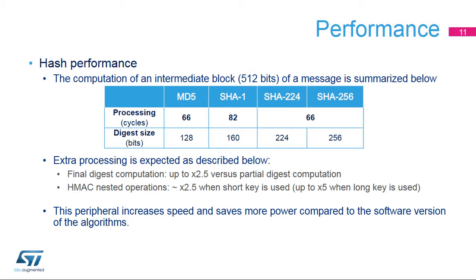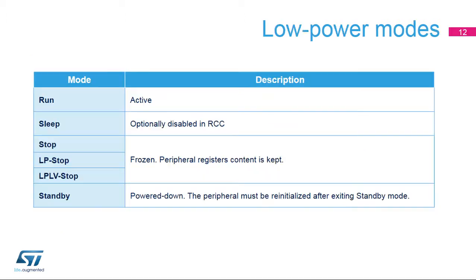Speedup factors are: 1 to 2.5 for a hash message; around 2.5 for an HMAC input key; 1 to 2.5 for an HMAC message; around 2.5 for an HMAC output key in case of a short key; and 3.5 to 5 for an HMAC output key in case of a long key.